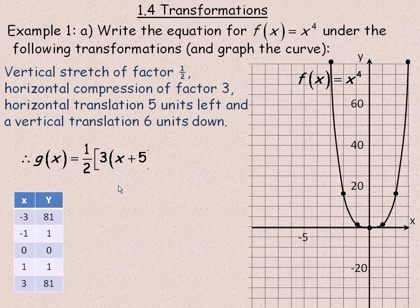Our new equation has the vertical stretch of a half — the whole function gets multiplied by a half. You do stretches and compressions first, so I'm not multiplying the negative 6 by a half, because if I did, I wouldn't get a translation of 6 units down — I'd get a translation of only 3 units down.